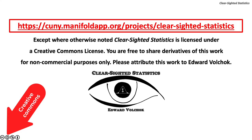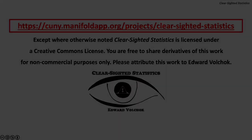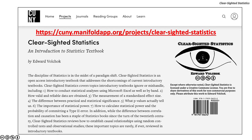Except where otherwise noted, clear-sighted statistics is licensed under a Creative Commons license. You are free to share derivatives of this work for non-commercial purposes only. Please attribute this work to Edward Volchuk. You can access clear-sighted statistics for free, along with its Excel and PowerPoint files, on the CUNY Commons at https://cuny.manifoldapp.org/projects/clear-cited-statistics.